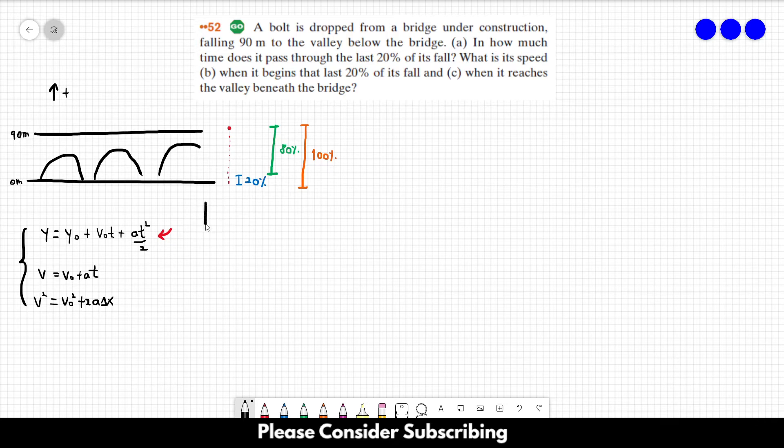So let's make the calculations for the first 80% of the fall. So the final position over here is 90. The 20% of 90, so 20% of 90 is 90 divided by 5, which is equal to 18 meters. So the initial position y0 is 90 meters. The final position is 18 meters. So the initial velocity is 0. So this term over here is 0.